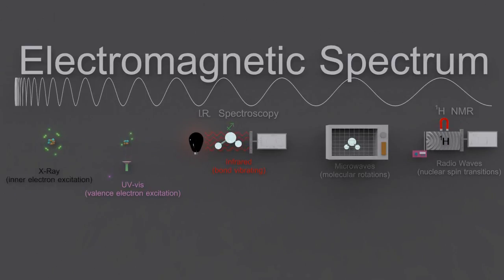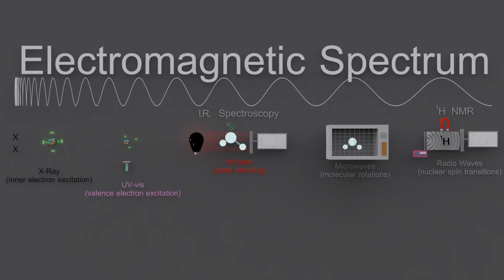Electromagnetic radiation interacts with atoms and molecules in different ways, from the high energy x-rays on the left of this animation to the low energy radio waves on the right. So let's see what each part of the spectrum does.